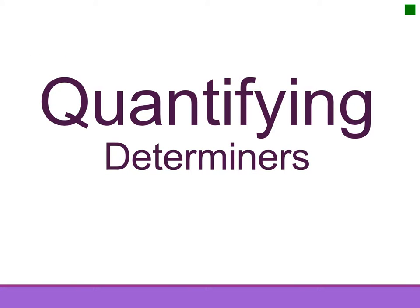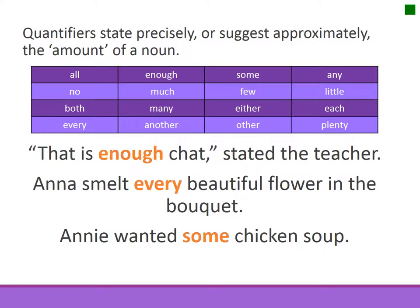Quantifying determiners state precisely or suggest approximately the amount of a noun. For example, that is enough chat, and I smelt every beautiful flower, and he wanted some chicken soup.